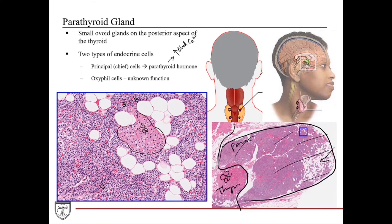The oxyphil cells can be present as a single cell or aggregate of cells. To this date, we're not quite sure what their functions are in the parathyroid, although some suggest the oxyphil cells could be stem cells that give rise to the principal cells, or that they are principal cells taking a rest. Some unilocular adipocytes can also be appreciated in this field of view.